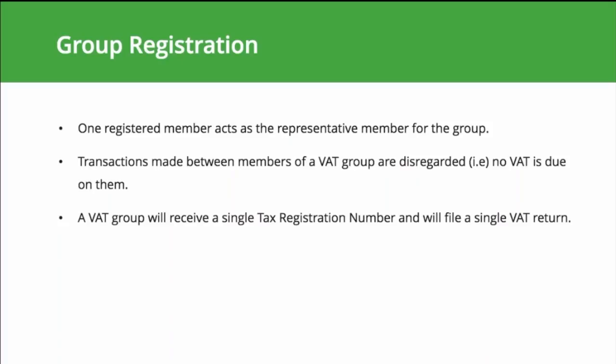Transactions made between members of a VAT group are disregarded — that is, no VAT is due on them. However, supplies made by a VAT group to an entity outside the group will be subjected to normal VAT rules. When a company registers as a VAT group, it will receive a single tax registration number and will file a single VAT return.